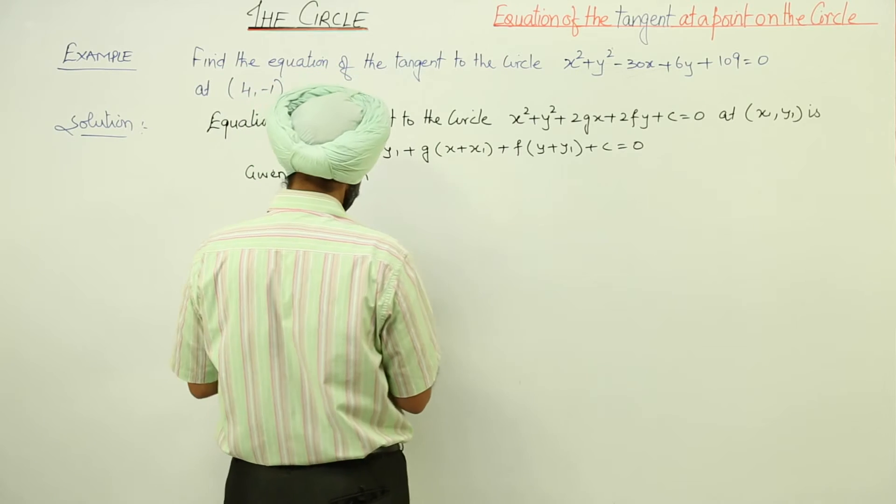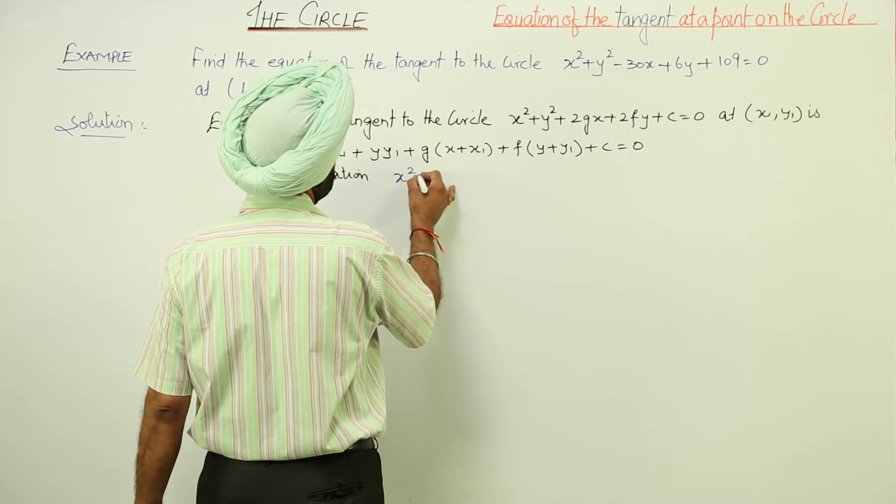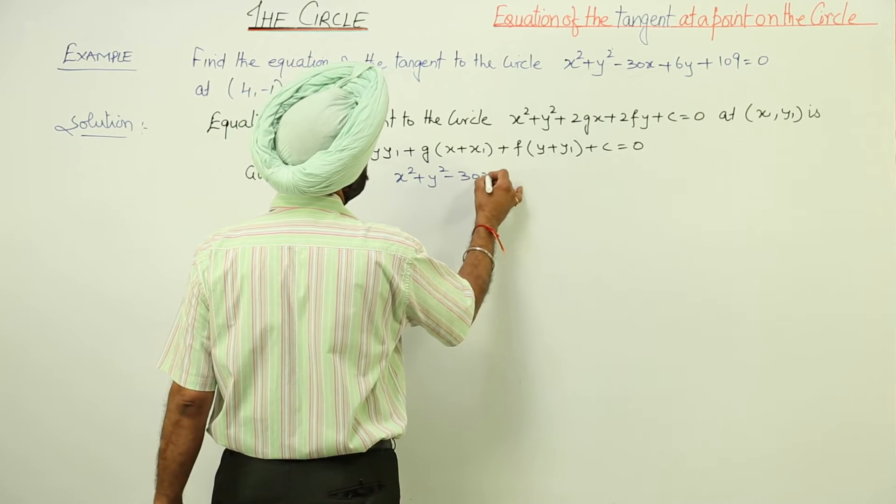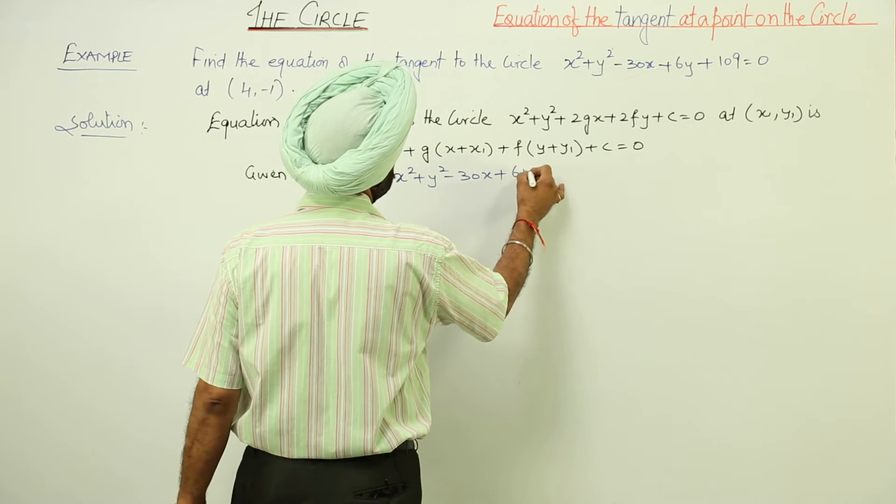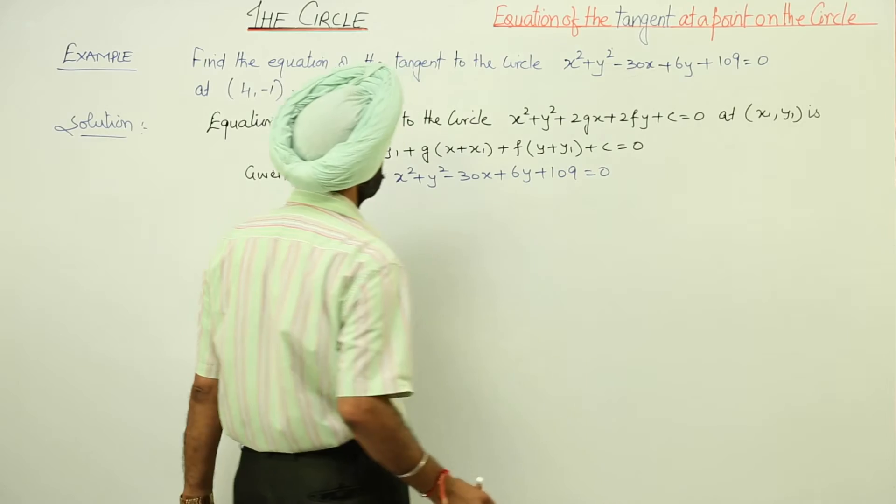Now, given equation is x² + y² - 30x + 6y + 109 = 0.